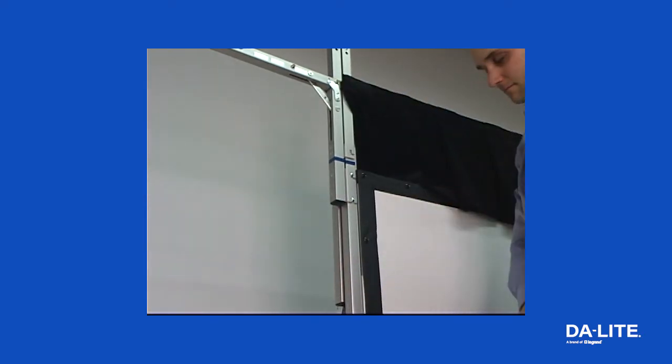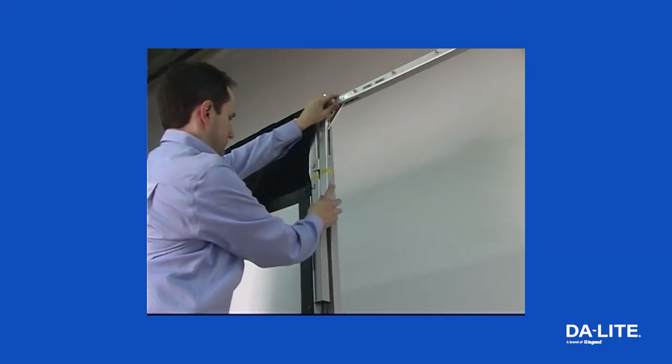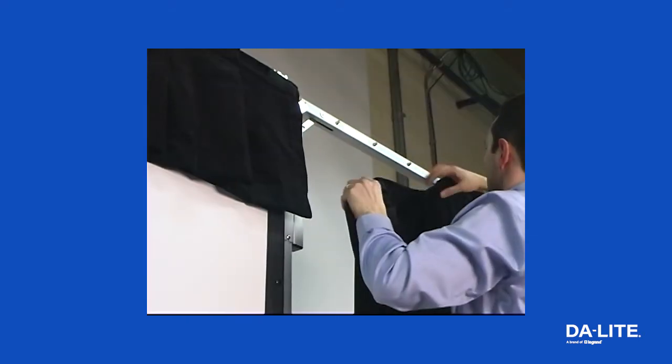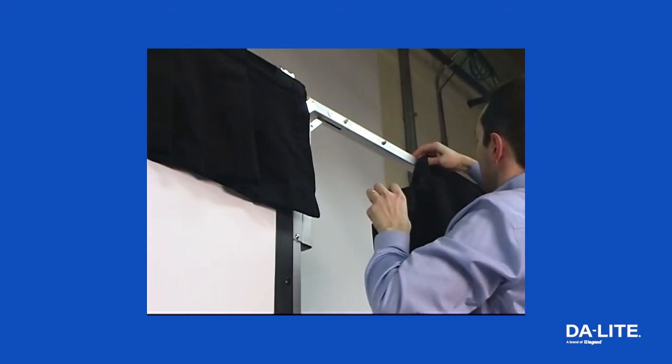The wing bars can also be attached directly to the frame if the valance is not being used. The wing drapes can now be snapped to each wing bar.